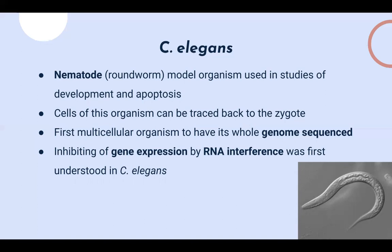Additionally, the inhibiting of gene expression by RNA interference — abbreviated as RNAi — was first understood in C. elegans. Scientists used C. elegans to understand how this inhibition by RNA interference works.